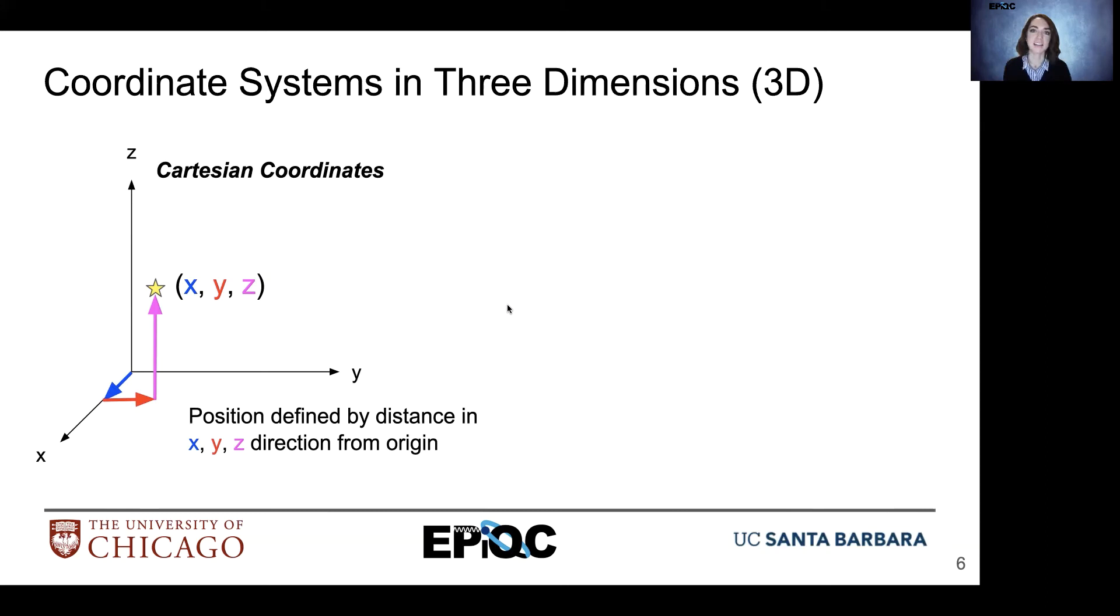So let's build on these coordinate systems and add another dimension. The Cartesian coordinates can add the z-axis, which typically we have that going up in the positive direction, where x moves forward, and then y moves from left to right. And we define our point of interest as distances from the origin in the x, y, and z directions.